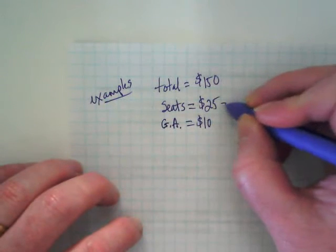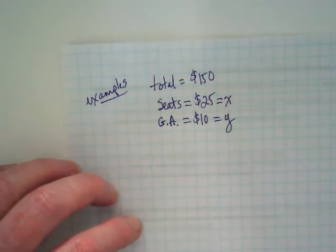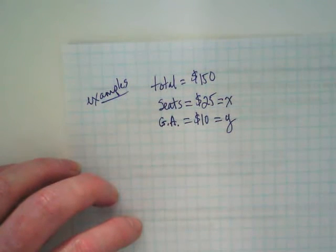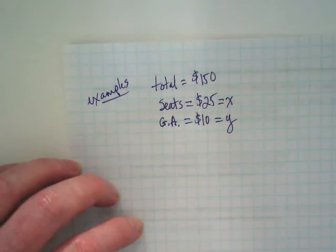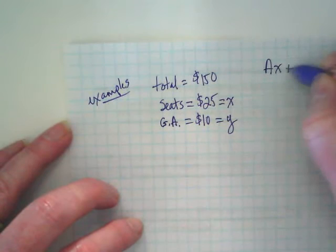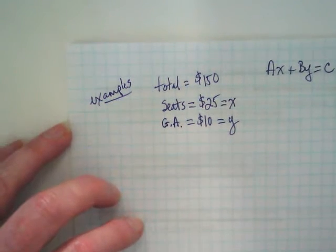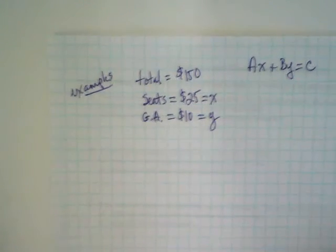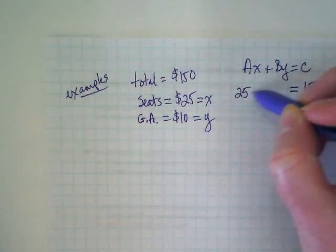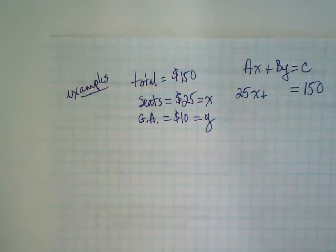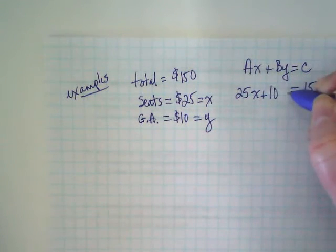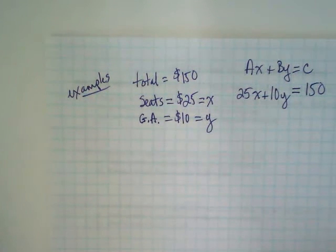General admission, which is usually just referred to as GA, is $10. It's a good deal, right? We're going to say that seats are X and general admission is Y. I'm just making that up, we could do it either way. I tend to put whatever shows up first in the problem as X because we're going to be writing this in Ax + By = C form and the X is first. Let's take the information we have and put it into the form. What's our total? 150. What's my A? 25 times X plus 10 times Y.